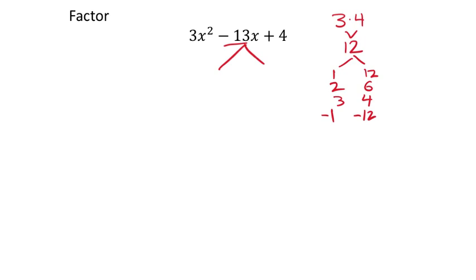So my negative 13 x's I'm going to split up into, and it doesn't matter how you do this, but negative 1x, and I'm going to make this one negative 12x, okay? So my negative 13x I've split up into these two separate terms. Then I've got my 3x squared and then also the plus four to go with it, okay?